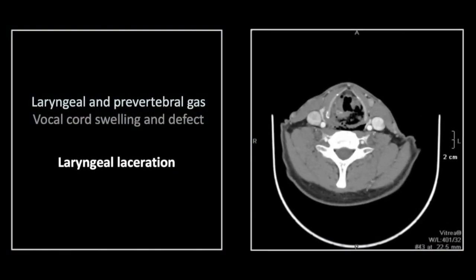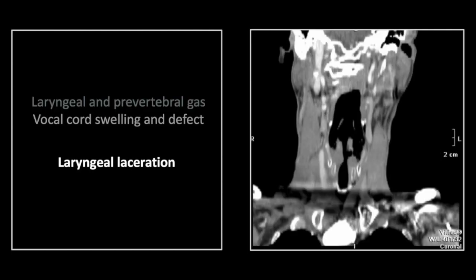Our next case is a laryngeal laceration. There is a good deal of prevertebral soft tissue gas. Right here at the posterior lateral aspect of the glottis, you can see a defect allowing that gas to escape. Here on the coronal, the location of that defect is more precisely defined — it is essentially in the laryngeal ventricle. The cords on the opposite side are significantly swollen and distorted as well.